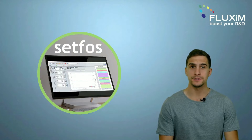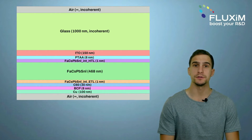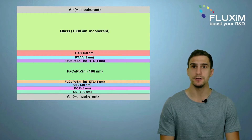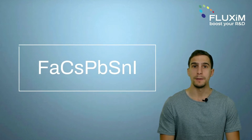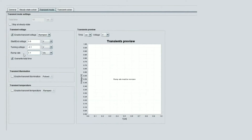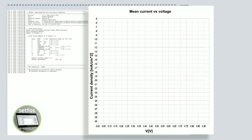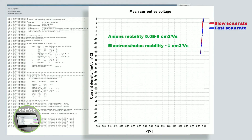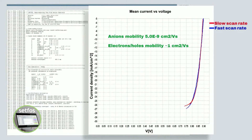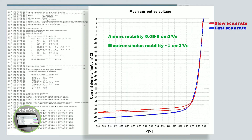We use SETFOS to analyze the influence of mobile anions on electrical performance of a state-of-the-art perovskite solar cell based on this composition. By performing voltage scans in both the forward and reverse direction at an increasing scan rate, you can assess the presence and impact of mobile ions. Anions have a mobility that is up to a billion times smaller than electrons or hole mobility; therefore hysteresis effects occur at slow scan rates. In such case, the ions have time to redistribute within the perovskite film. At faster voltage rates, the ions are immobile and do not influence the built-in potential, so the hysteresis cannot be observed.